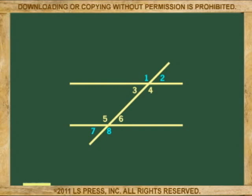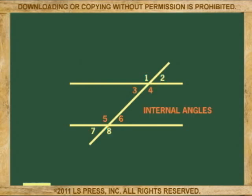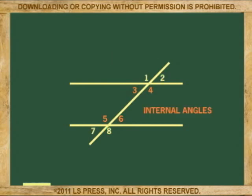These four angles — 1, 2, 7, and 8 — which are outside the parallel lines, are called external angles. And these four, which are inside the parallel lines, are called internal angles.